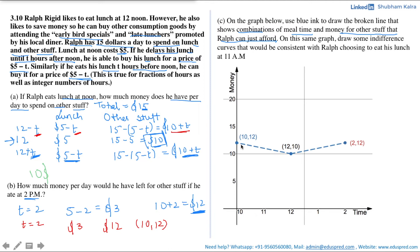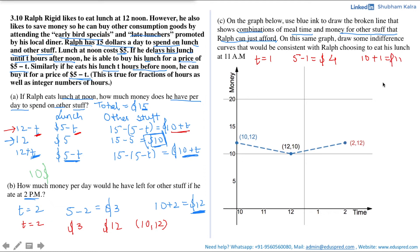The cost of eating lunch increases the closer he eats to noon, so money left for other stuff is minimum at noon when lunch costs the maximum of $5. The question further asks us to draw an indifference curve consistent with Ralph choosing to eat his lunch at 11am. If Ralph eats at 11am, he is eating one hour before noon, so t equals 1. The cost of lunch would be 5 minus 1, which is $4. The money left for other stuff would be 10 plus 1, which is $11. So if he eats at 11am, the combination is (11, 11).